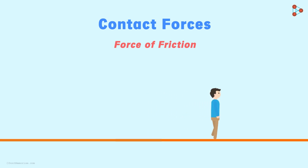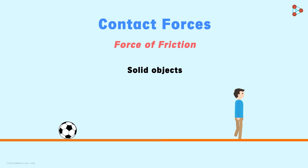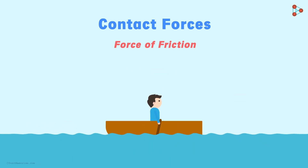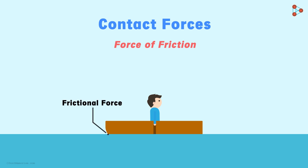The examples we have seen so far involve frictional force between solid objects. Now consider a boat moving in a quiet lake. In order for the boat to move, the person must continuously row it. If he stops rowing, the boat will also stop eventually, just like the rolling ball stopped on the solid surface. It stops because of the force of friction between the water and the surface of the boat which is in contact with the water.